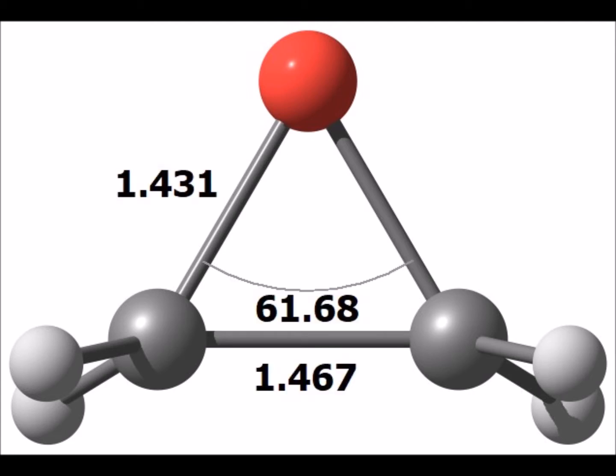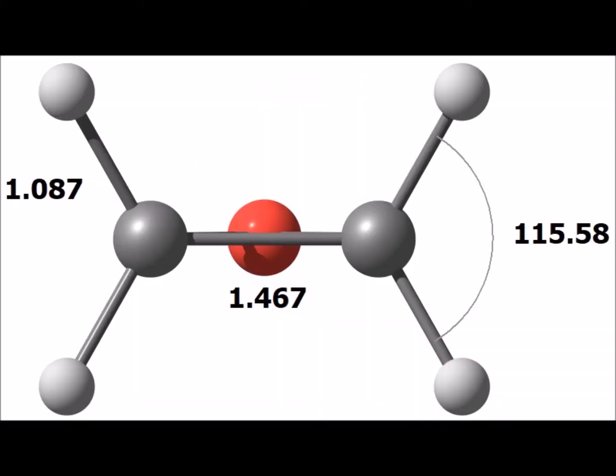Here is the computed structure of the product ethylene oxide, showing some of the important parameters. The carbon-oxygen bond length is 1.431 angstroms. The oxygen atom is shown in red. We see that it is very nearly an equilateral triangle, with the carbon-oxygen-carbon angle being 61 degrees, and the carbon-carbon bond length of 1.467 angstroms.